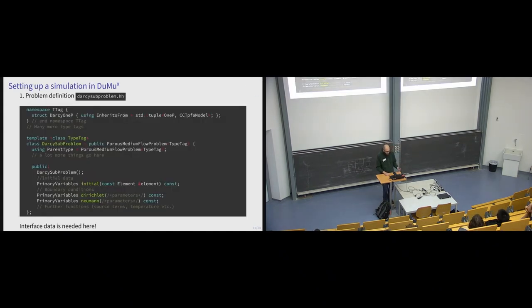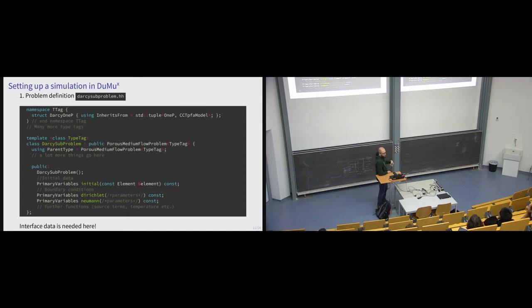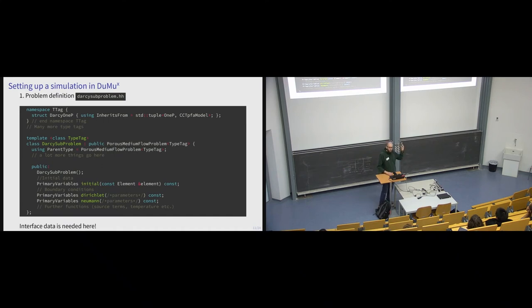Setting up a simulation in DuMux typically requires two files: a header file with a template class defining your problem, where you collect data structures from DuMux — for example, specifying a cell-centered point flux approximation spatial discretization and deriving from the porous medium flow problem so it knows which equation to solve. You then define initial conditions, Dirichlet conditions, and Neumann conditions. For the adapter I want to write, applying Neumann conditions is where I apply coupling conditions — the data I need to exchange with preCICE must be read in that class.